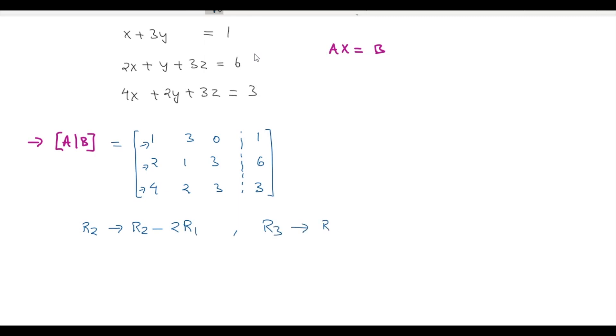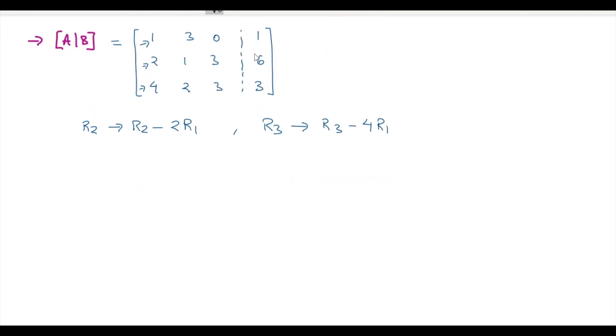as R3 minus 4 times R1. This gives [1 3 0 | 1; 0 -5 3 | 4; 0 -10 3 | -1]. So we have achieved our column 1 as A11 to be 1 and other elements to be 0.